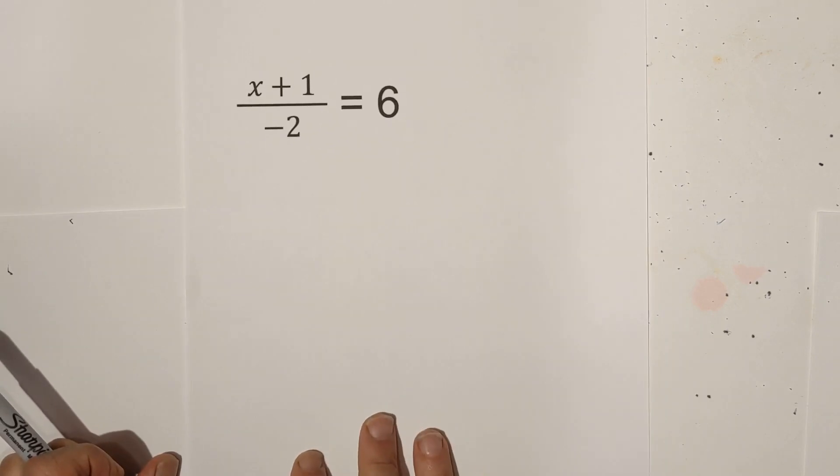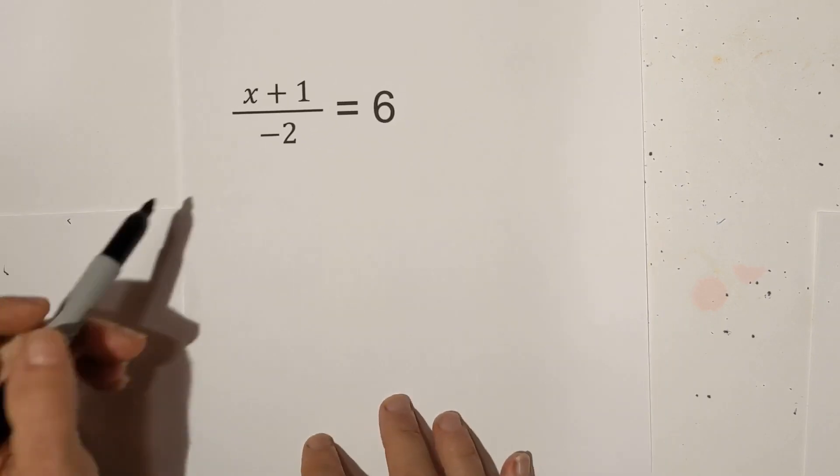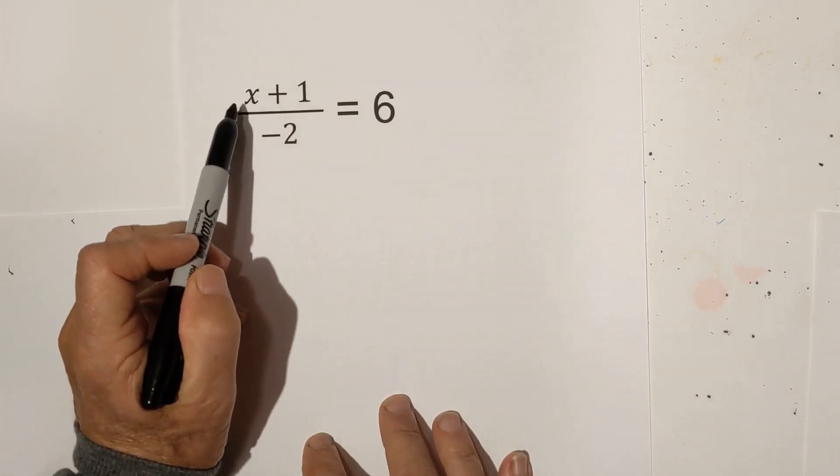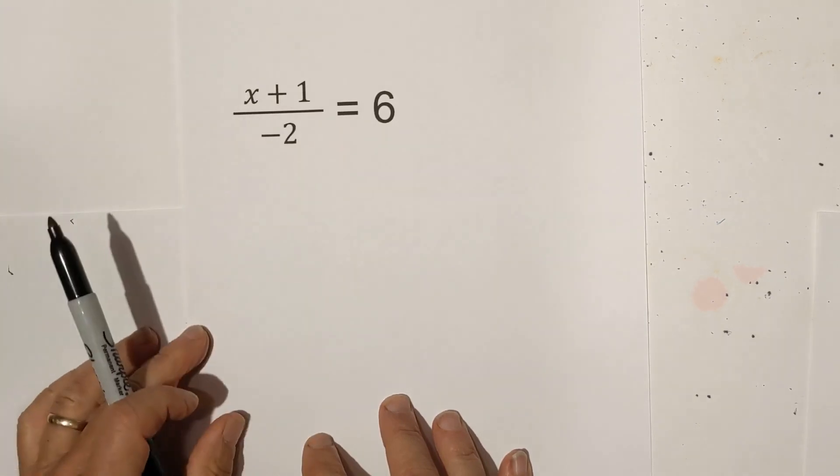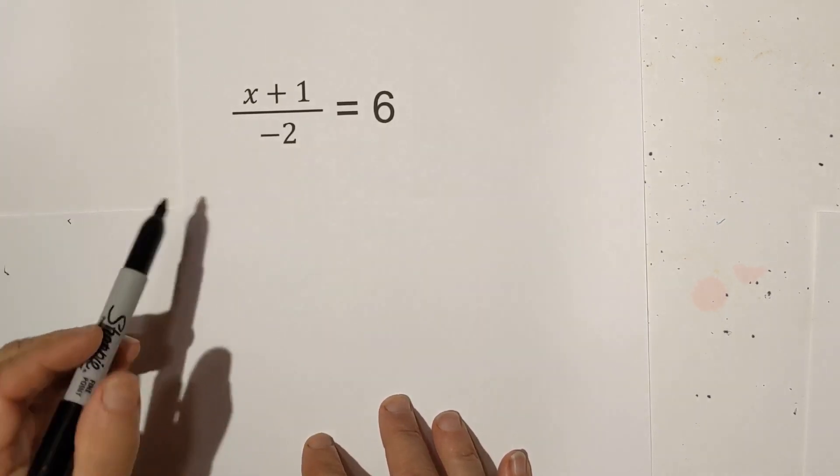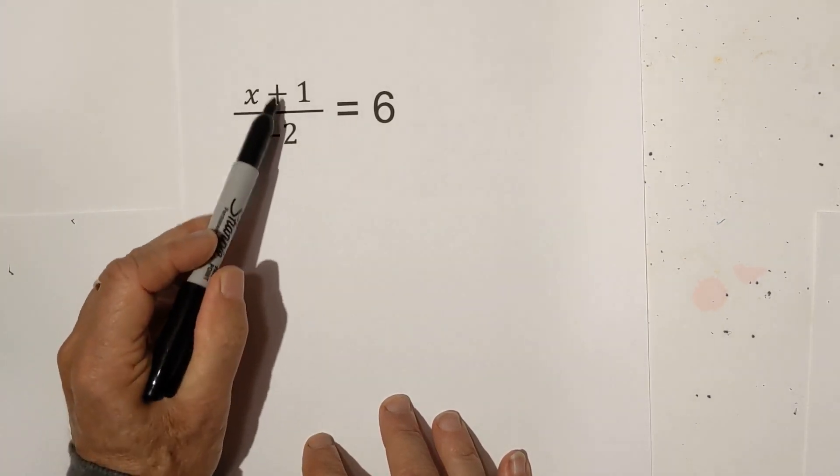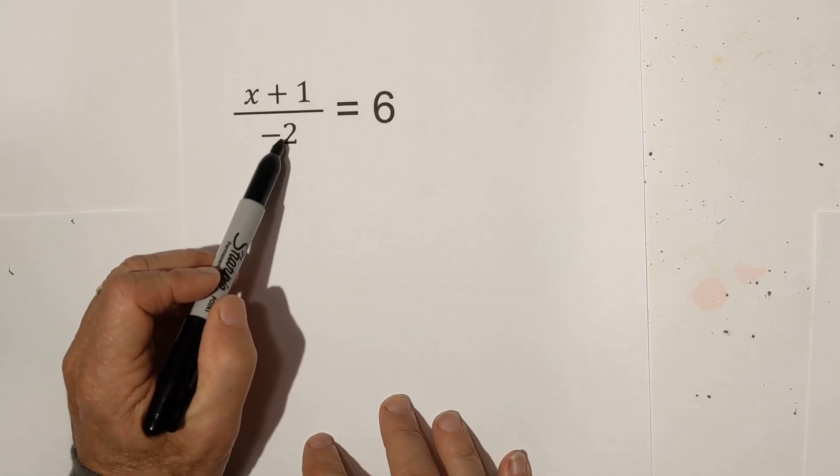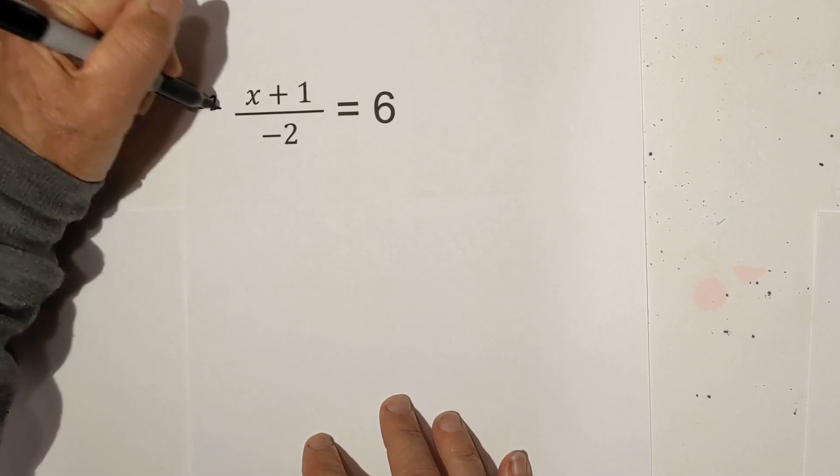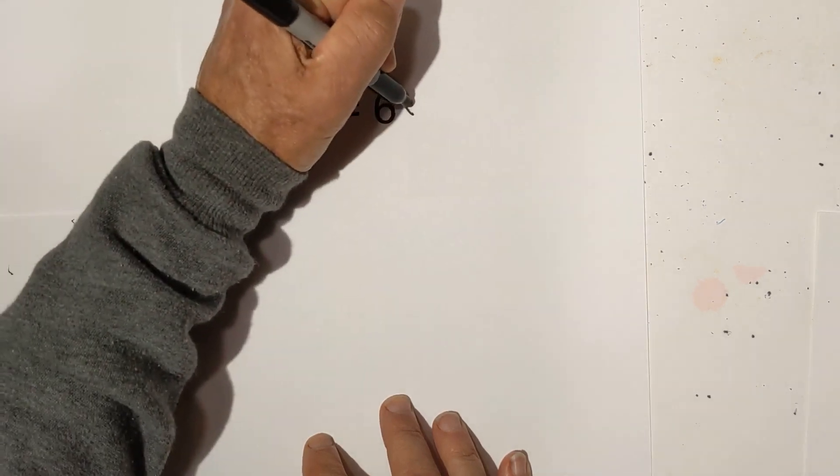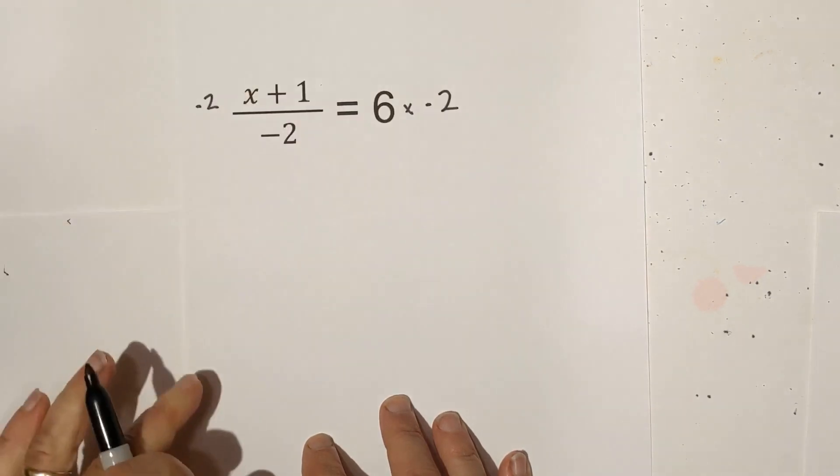With this next example, you have x here. So we know we need to get x by itself. But we have it in this fraction form. So what do we do? Well, we know that this is division. So we can get rid of this 2 by multiplication. So we're going to multiply each side times 2, excuse me, a negative 2.